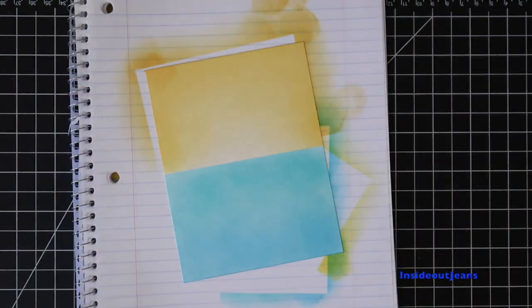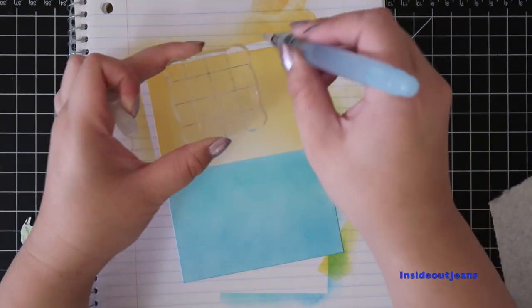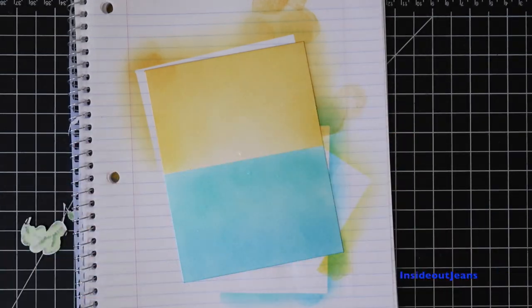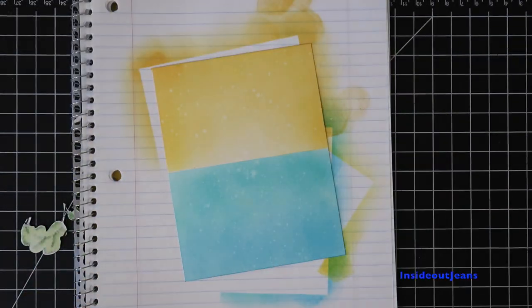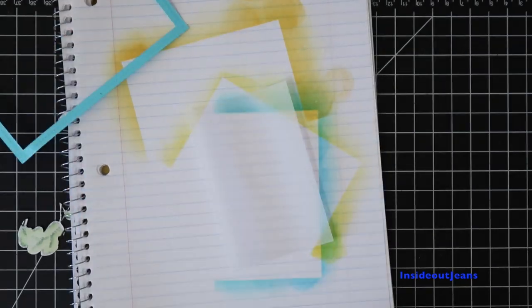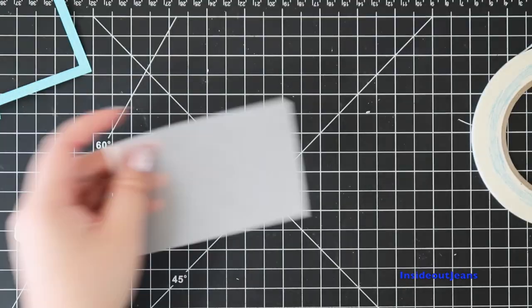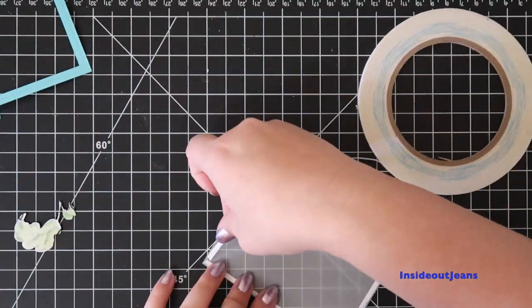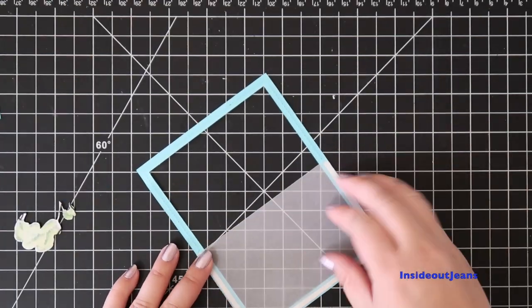I'll blend these colors out pretty quickly and I decided I wanted to add a bit of interest to the background. So I use an acrylic block and a water brush to place specks of water everywhere. Once I do that with the distress inks, it will pull up the color and I just use a paper towel to do that.